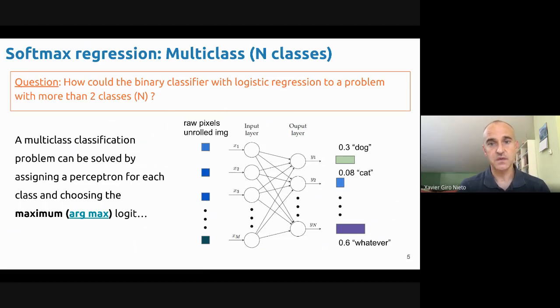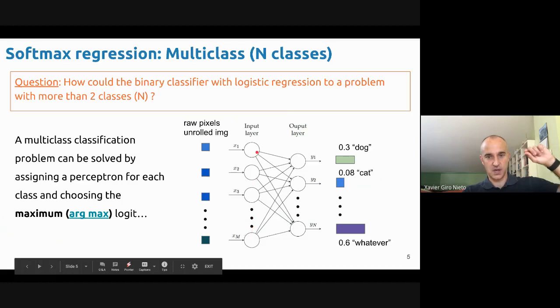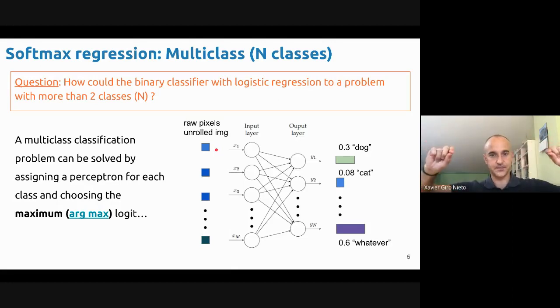This is what you have in this graph. Imagine we take our images and unroll them, which means we put all the pixels one next to the other. All images are of fixed size, and we feed each pixel as the input of a multi-layer perceptron. This is our input layer, where each dimension corresponds to a pixel. This is a very bad idea in practice, but it's good to understand what we're doing. We have one perceptron here looking at all the pixel values, specialized in dogs. Another for cats, and one perceptron for each class.